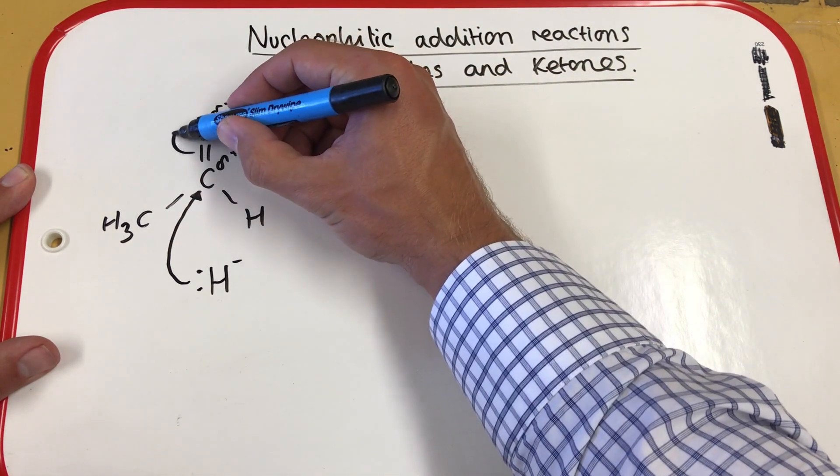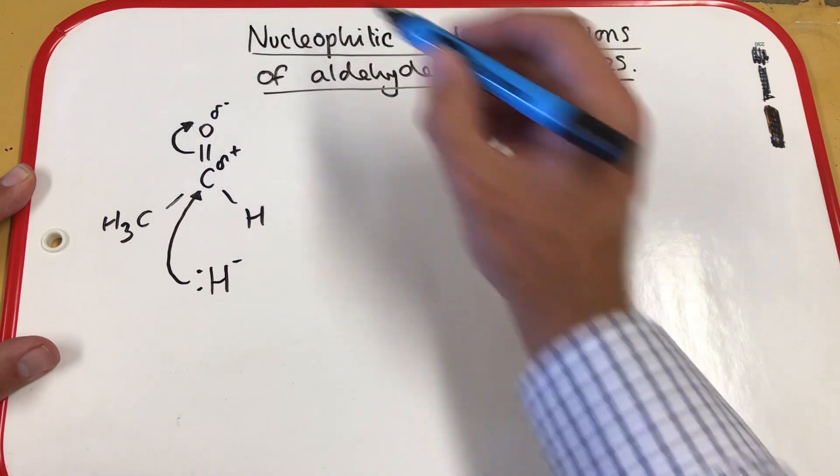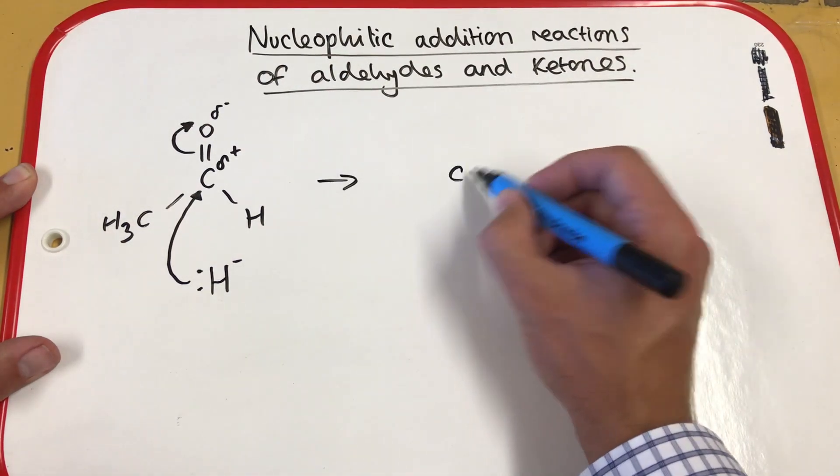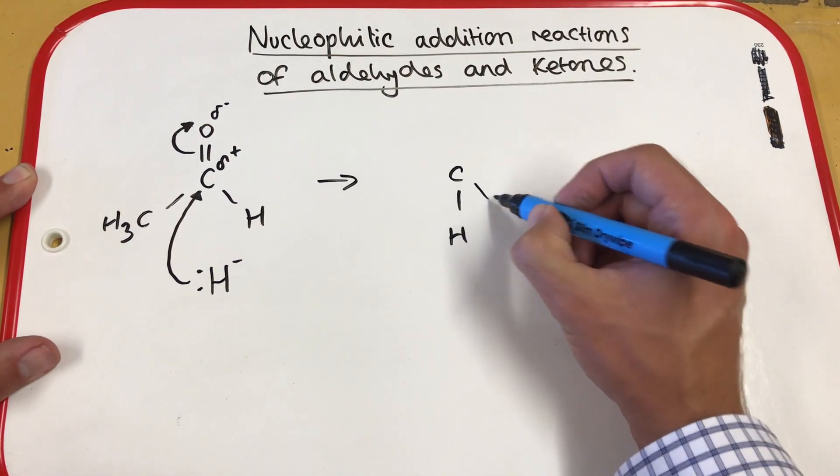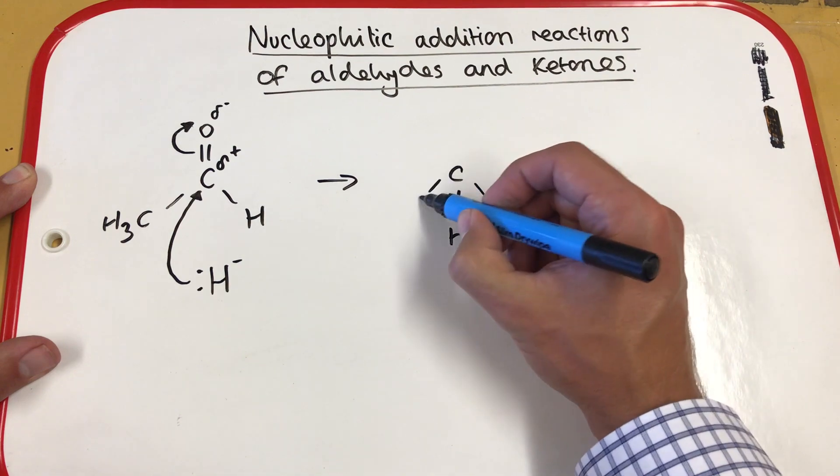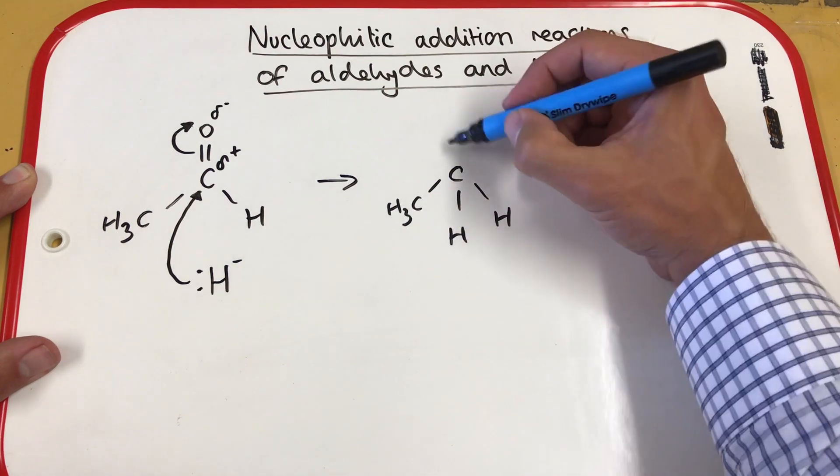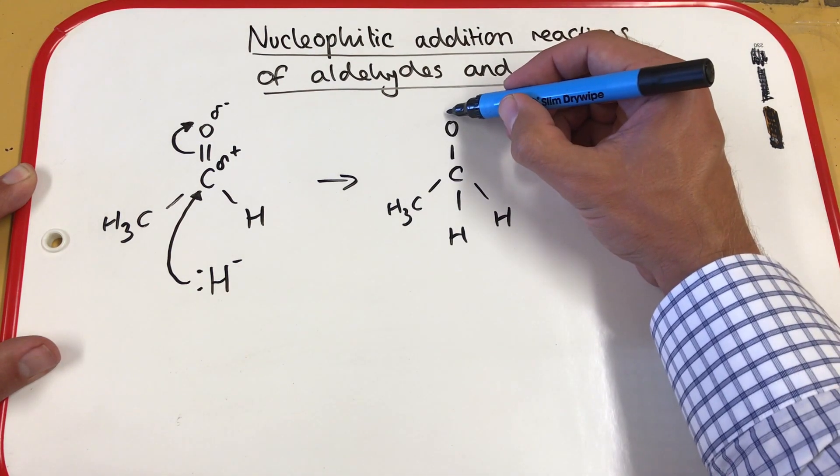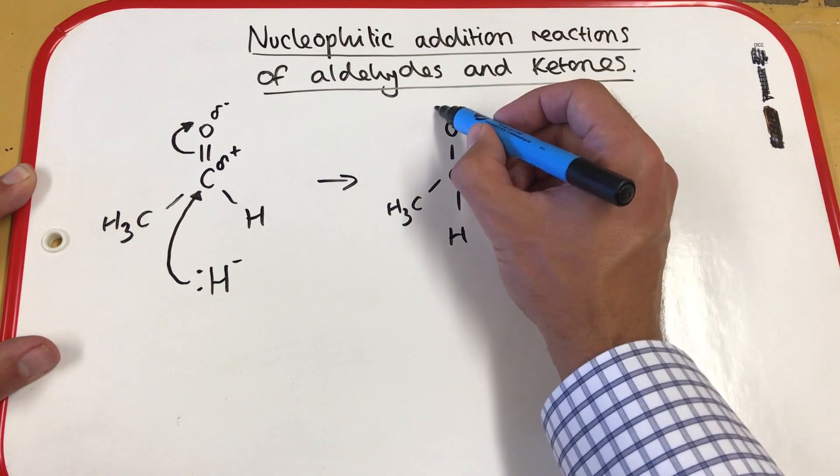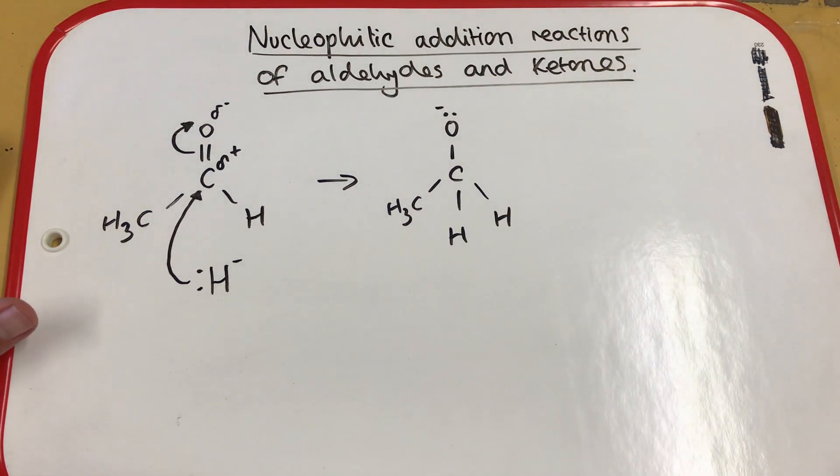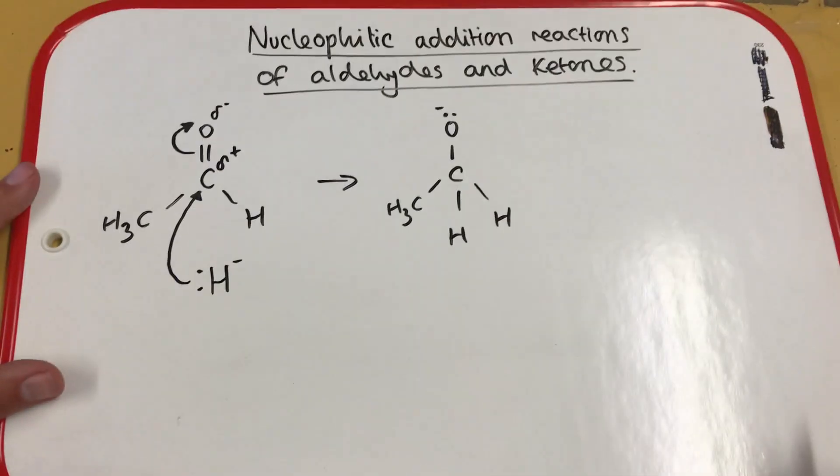This is going to repel the electrons in the double bond towards the oxygen. We'll have an intermediate here, which has the hydrogen added to it, and we have our negatively charged oxygen there because the electrons have been repelled away.